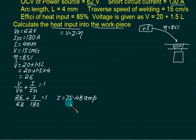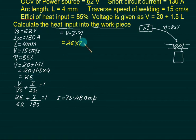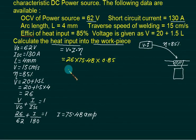I got I equals 75.48. I got V equals 26. So my power input is V multiplied by I: 26 multiplied by 75.48, multiplied by efficiency 0.85. Put this value back: the answer is 1.66 kilowatts. The answer will come in watts, but you are getting kilowatts.